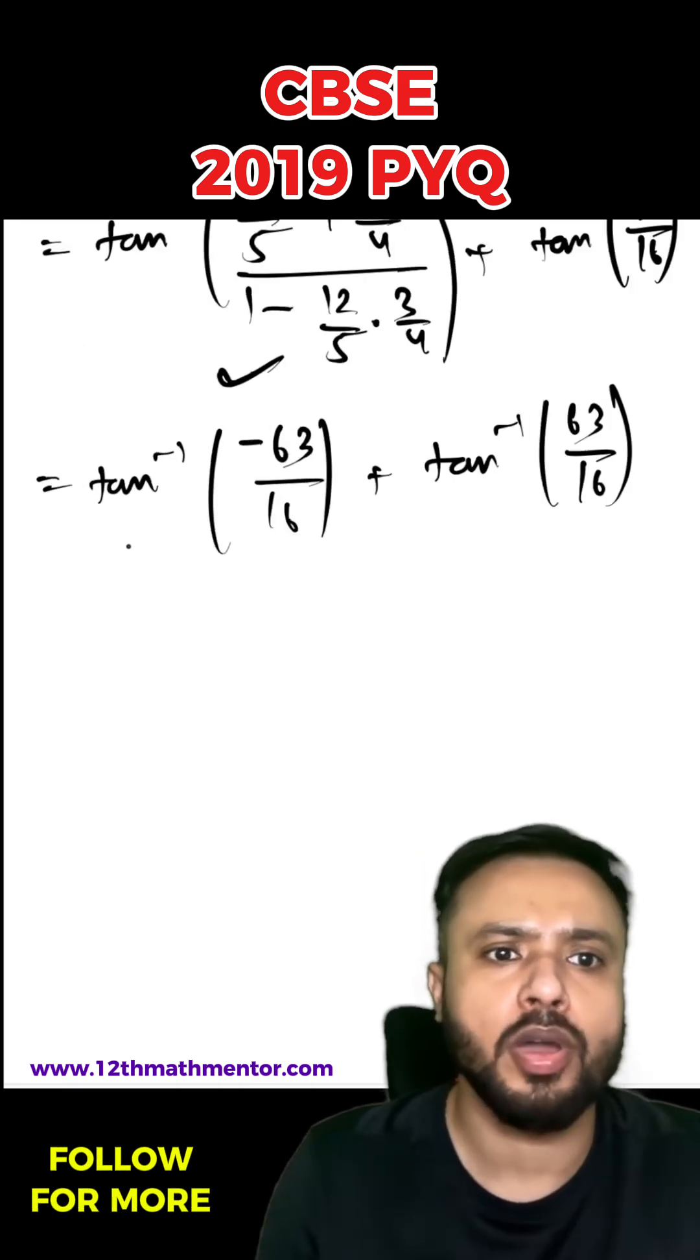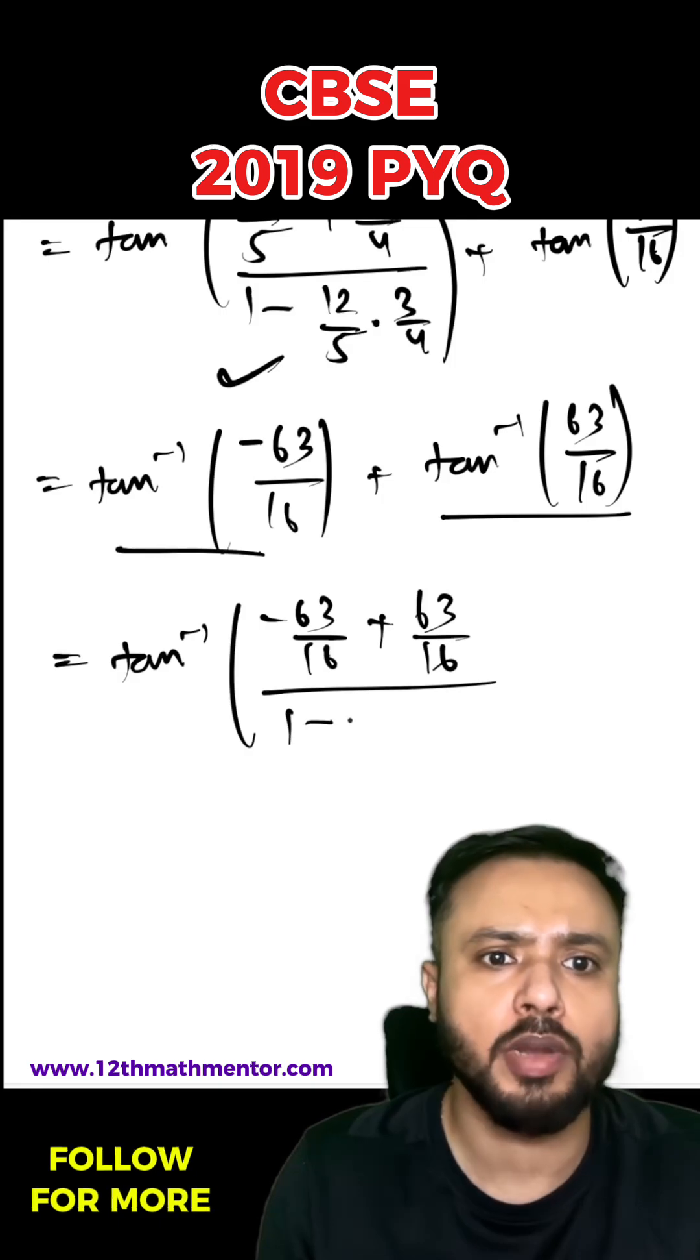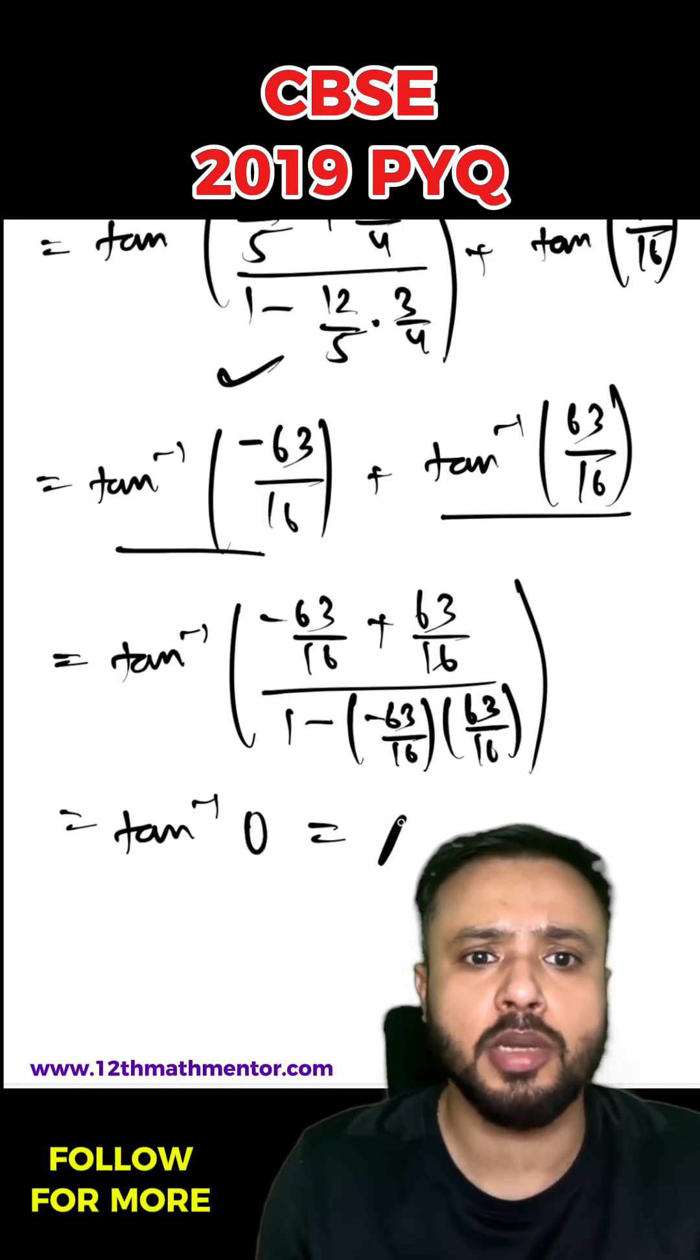That's going to be tan inverse negative 63 by 16 plus 63 by 16 upon 1 minus negative 63 by 16 into 63 by 16, which I'll get as tan inverse 0, and tan inverse 0 is nothing but pi. So this is my RHS.